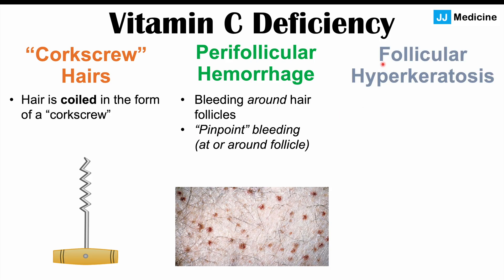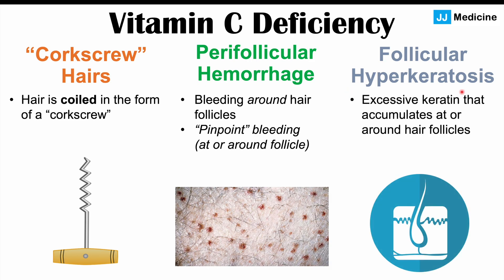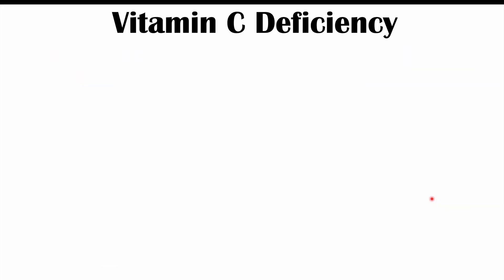We can also see follicular hyperkeratosis, where there is excessive keratin that accumulates at or around the follicle. Vitamin C helps with keratin synthesis, so if there are any issues, we can see a buildup of keratin around hair follicles. This appears as bumps on the skin around hair follicles — follicular hyperkeratosis — and it can occur in vitamin C deficiencies.